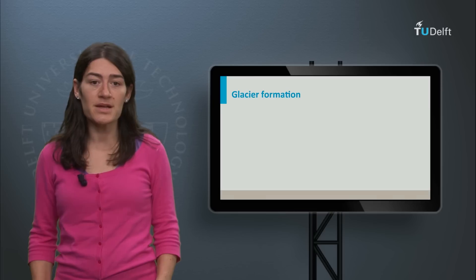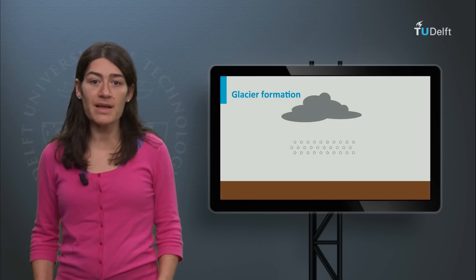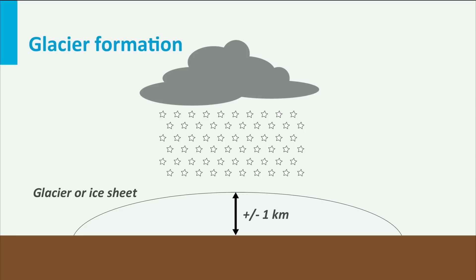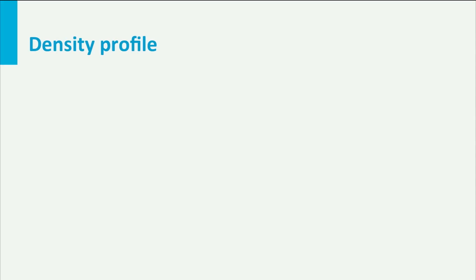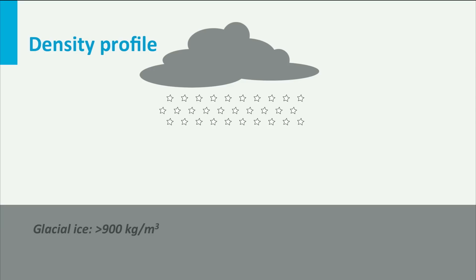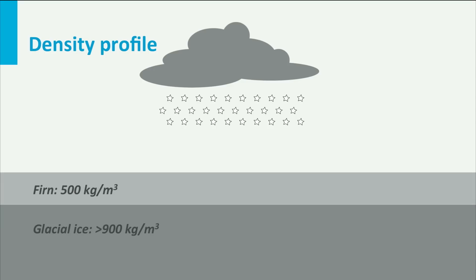Ice sheets and glaciers form from snowfall that accumulates over land over thousands of years, reaching thicknesses of hundreds to a few thousand meters. The accumulated snow compacts due to its own weight, and in this process pore space is reduced until it turns into ice at depth. Densities range between 200 kg per cubic meter for fresh snow at the surface and 910 for ice at depths between a few and 100 meters.